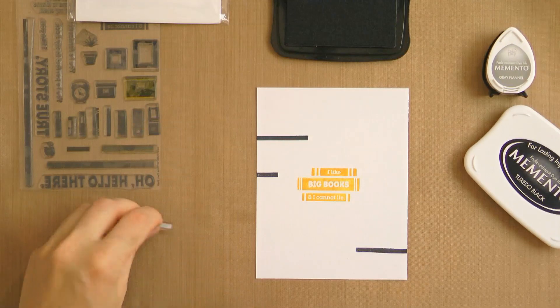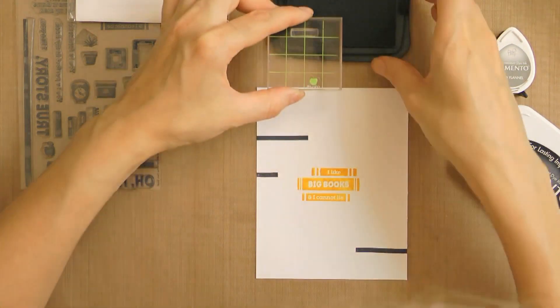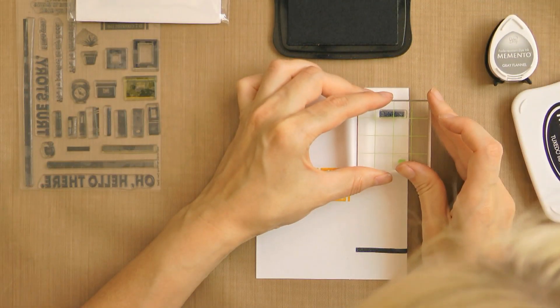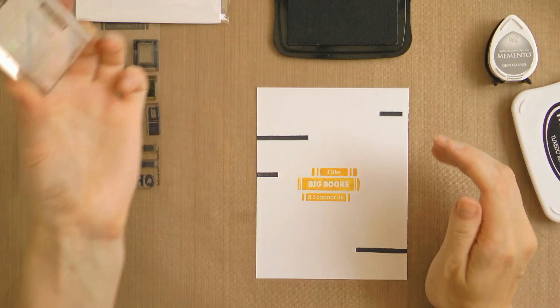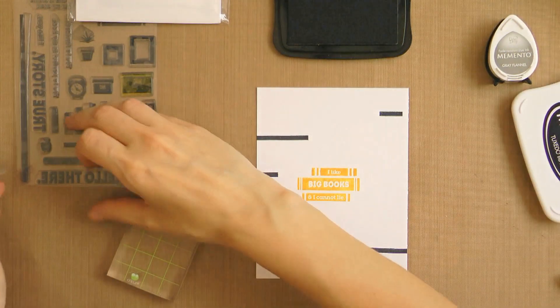Now instead of black ink you can use the Distress Gathered Twigs ink from the kit, especially if you want to create some realistic looking wooden shelves and worn books. I know Distress ink is not the best for regular stamping but in this case it creates a fantastic and very realistic look too.